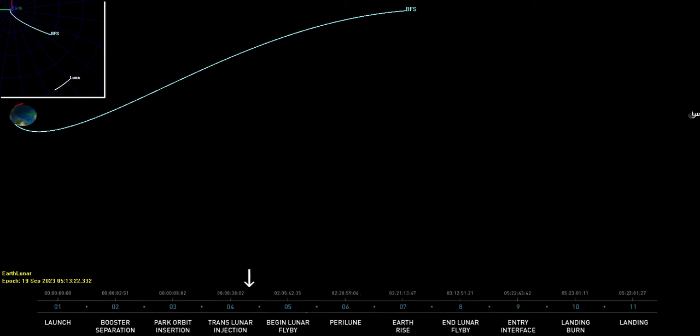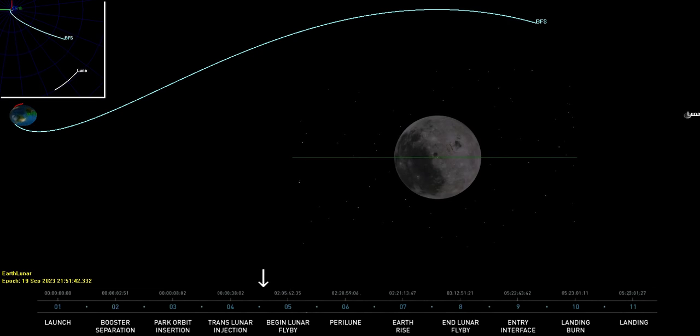A trajectory like this can be launched when the moon is anywhere in its orbit. But if we assume the passengers want to be treated to the spectacular lunar sunrise just as they pass their closest approach, the best time to launch would be near the first or third quarter moon. This simulation assumes a launch on September 18th, 2023, just when the moon is waxing into its first quarter.